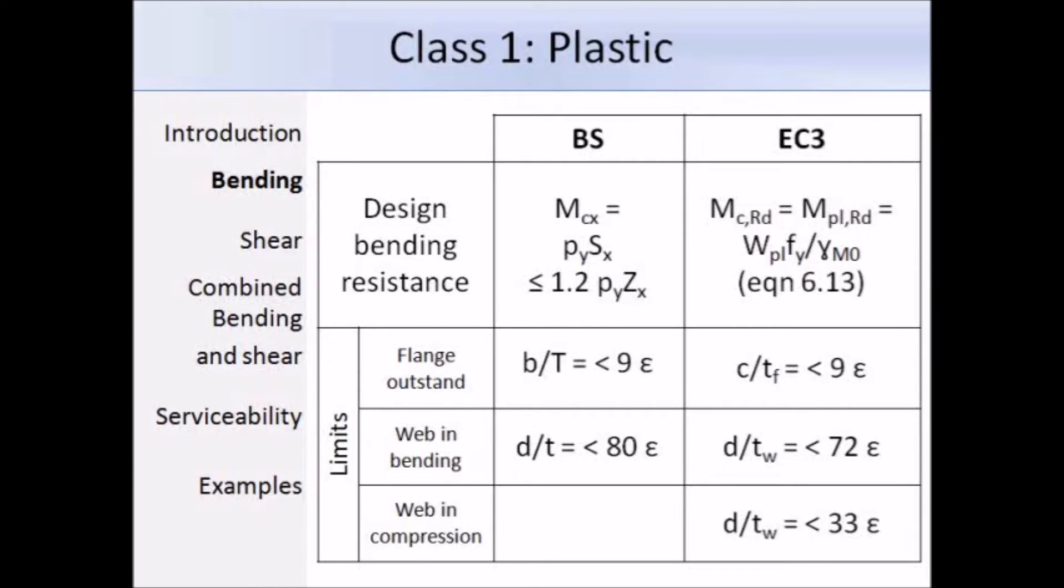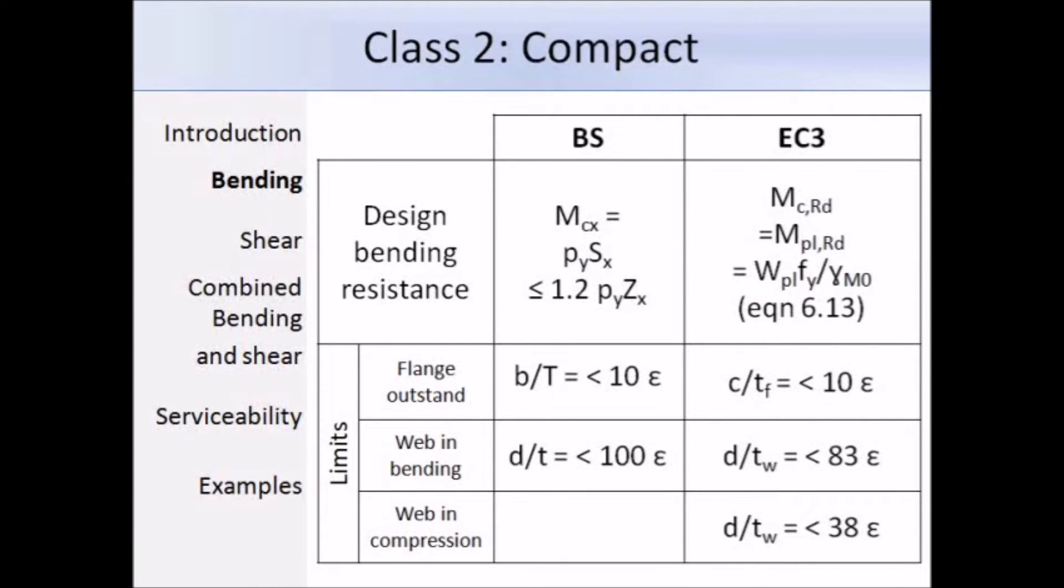Eurocode 3 describes a section as being class 2 if it can develop its plastic moment resistance but has limited rotation capacity because of local buckling. Again you'll notice a change in the class limits between BS 5950 and Eurocode 3, but the design bending resistance for both is exactly the same as that for class 1. Therefore the design bending resistance expression for class 1 and 2 sections is the same, and is the plastic modulus times the yield strength divided by a partial factor. The expression for the design bending resistance for class 1 and 2 sections in Eurocode 3 is 6.13.